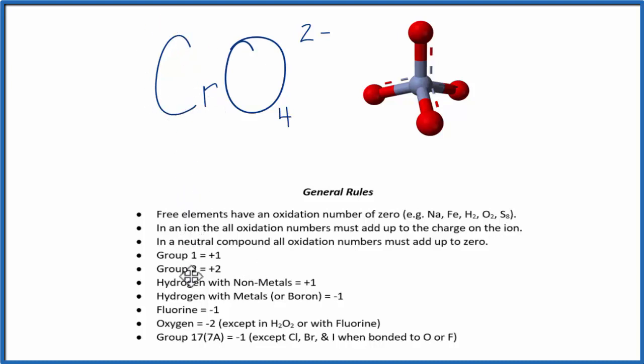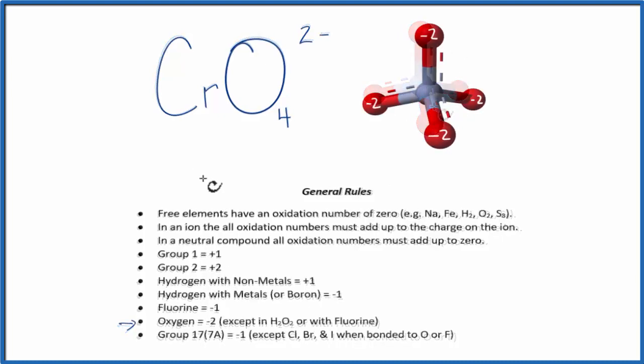So we go down the rules, and we can see that we're not finding chromate, but oxygen almost always has a minus 2, with a few exceptions. So each one of these oxygen atoms here is going to have an oxidation number of minus 2.